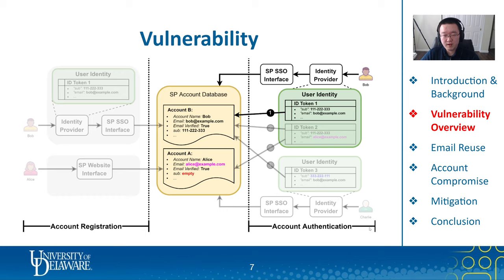Now comes the SSO authentication part. Let's start with Bob again. If Bob tries to authenticate himself using ID token 1, which is the same token he used when registering the account, the service provider should allow Bob to access account B because the sub and email fields in token 1 match the information in account B. This is perfectly fine because Bob gains access to his own account. In our work, we refer to this scenario as case 1.